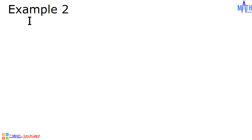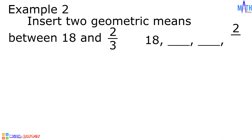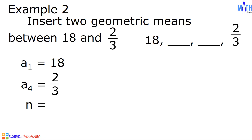Example number 2: let us insert 2 geometric means between 18 and 2 thirds. The geometric sequence appears to be like this: 18, 2 missing terms, and the last term is 2 thirds. Let us determine all the given values: a sub 1 is equal to 18, a sub 4 is equal to 2 thirds, and n is equal to 4.